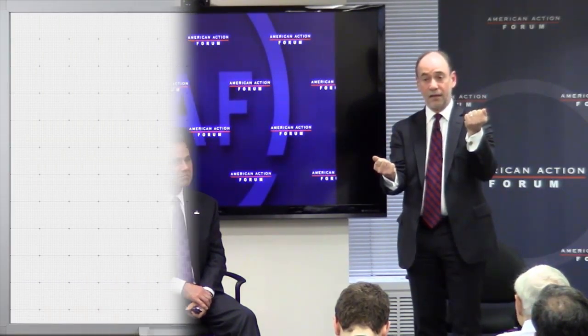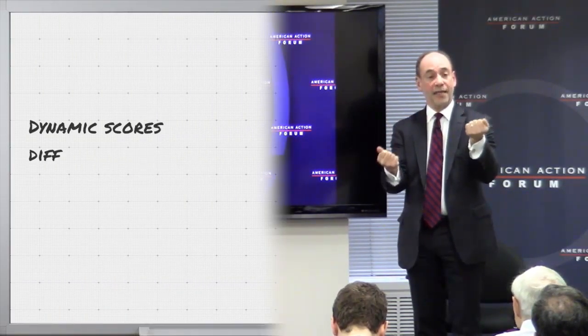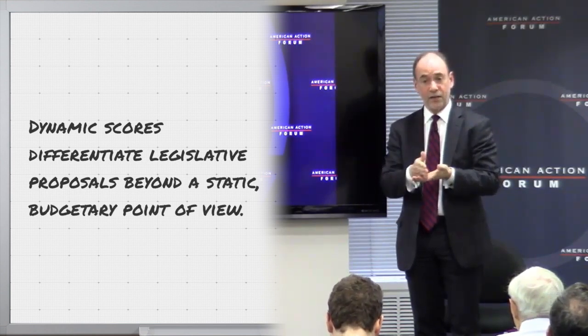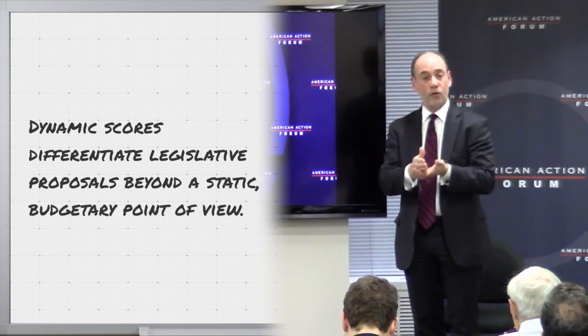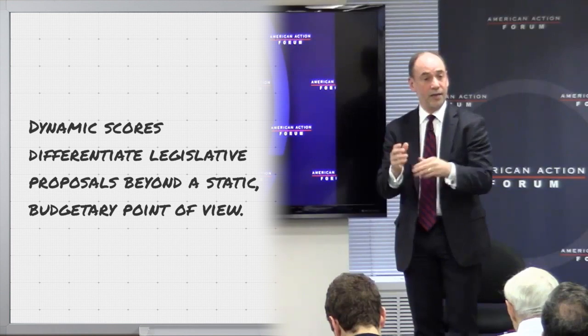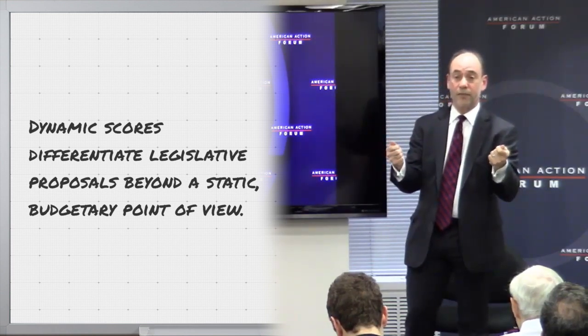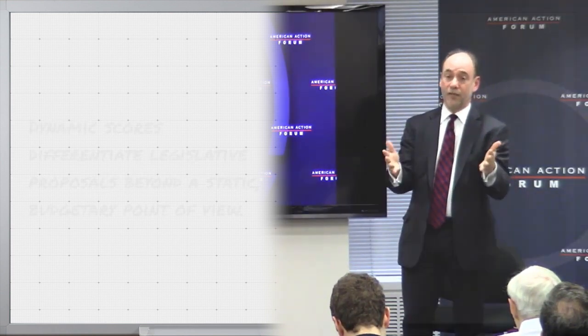You can see that it's important information because you can imagine two proposals that have the identical static score. One of them causes economic growth, one of them causes economic decline. They will have very different dynamic scores, and the dynamic score will convey to the policy makers the information that one proposal is good for growth, the other is not, although they are otherwise identical from a budgetary point of view. And that's information that's valuable to the process.